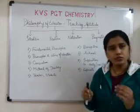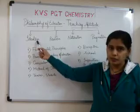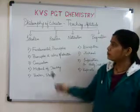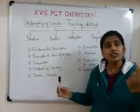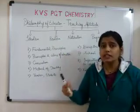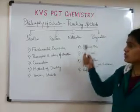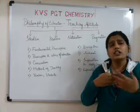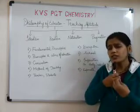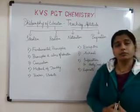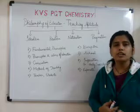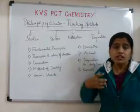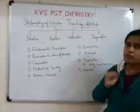We have four main philosophies of education. First is Idealism, which is based on ideas. Second is Realism — realism means reality; what is visible is real. Third is Naturalism — naturalism means nature, the natural way of teaching; everything is natural. Fourth is Pragmatism — pragmatism means what can be proved or verified; it is the philosophy of practical justification and experimentation.